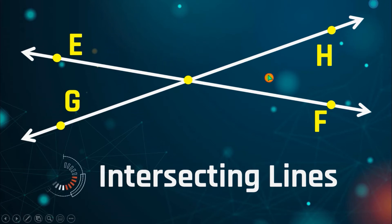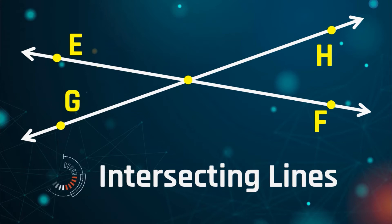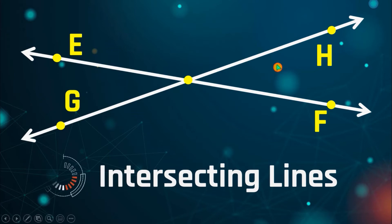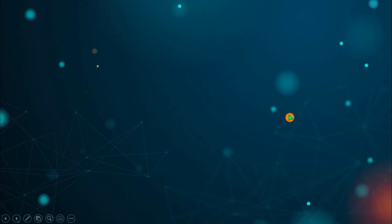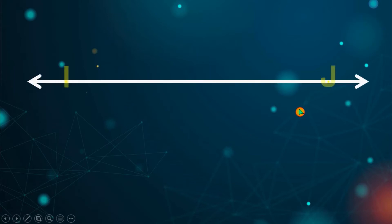We're going to identify those kinds of angles — pairs of angles — in the next video. For now, we're only going to determine the kinds of angles depending upon how the angle opens. Next, we have another special kind of intersecting lines which we are going to call perpendicular lines.